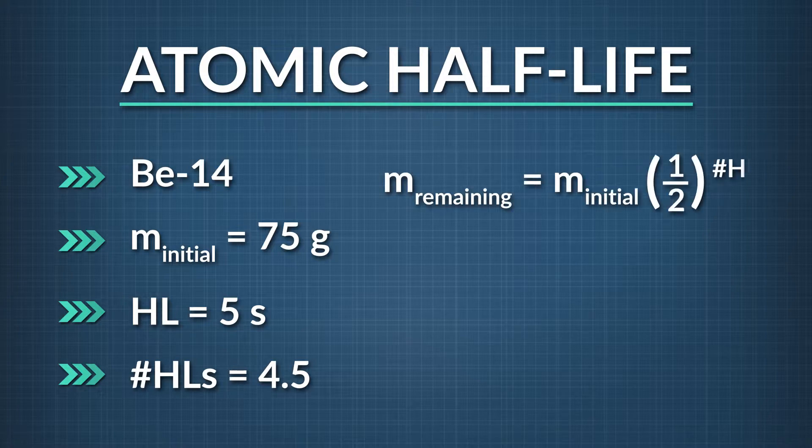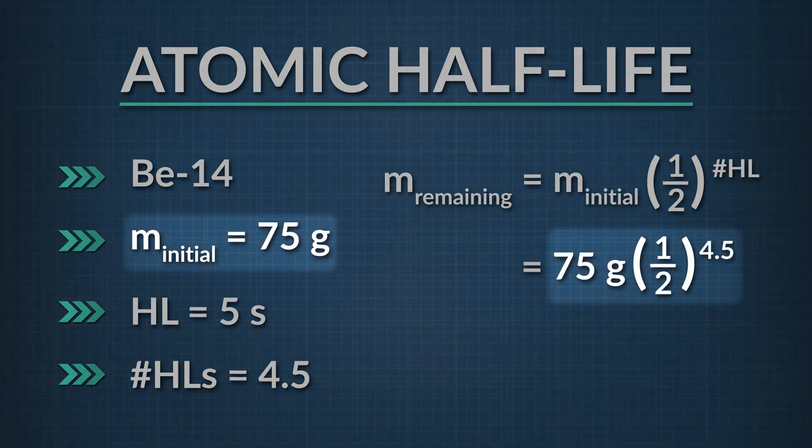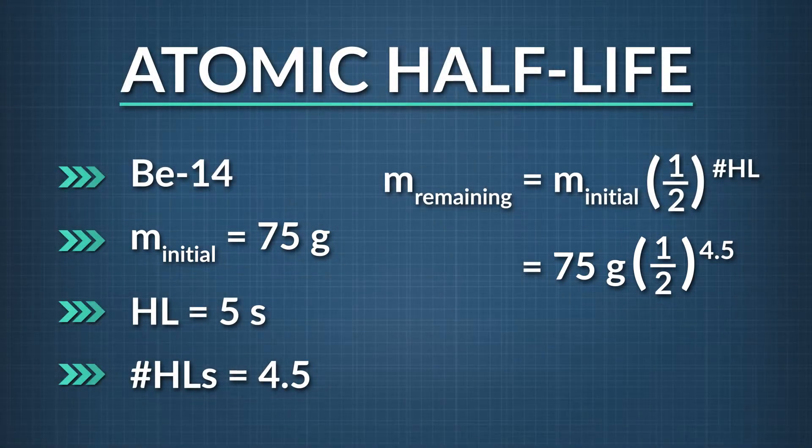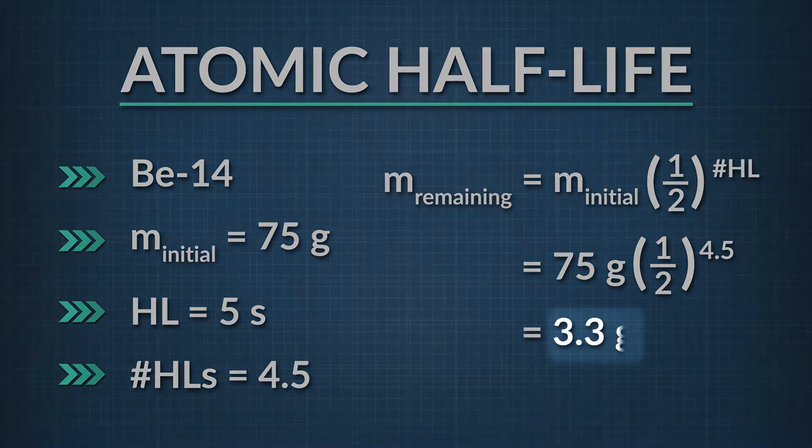Our equation involving initial and final mass is a great starting point for our solution. We're given the initial mass of the sample and the number of half-lives it experiences. We're solving for the mass remaining. Let's plug in the initial mass, 75 grams, and the number of half-lives, 4.5. When we plug our given numbers into the equation, we see the mass of beryllium-14 left over after 4.5 half-lives is 3.3 grams.